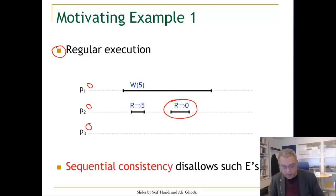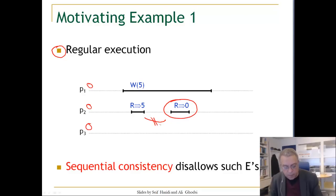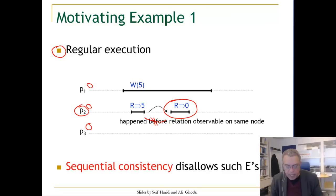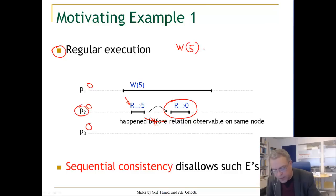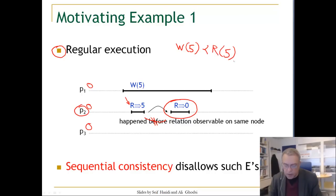That is exactly what sequential consistency disallows. Sequential consistency disallows this execution. In particular, it is not allowable — it is not possible for a process to read the value five and then after that read the value zero. The happened-before relationship has to be observed for sequential consistency. By reading five, we establish that writing five actually happens before reading five, and therefore it is not possible after that to read zero.